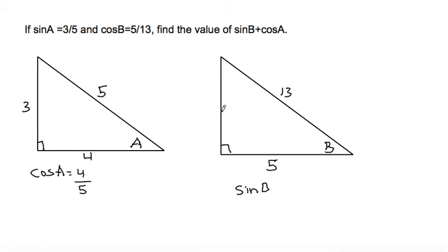So sin B would be opposite over hypotenuse of the B triangle, so this would be a 5, 12, 13 triangle, so it would be 12 over 13.